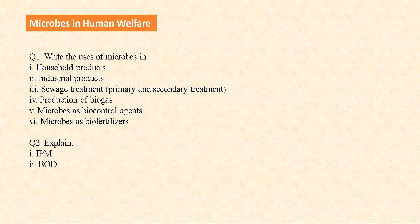The last chapter of this unit is Microbes in Human Welfare. Here you need to read the uses of microbes in different fields like household products and industrial products. For sewage treatment, read about primary and secondary or biological treatment. Also study production of biogas, microbes as biocontrol agents, and microbes as biofertilizers. Additionally, read two explanations: one on integrated pest management and another on biochemical oxygen demand.